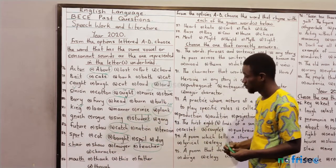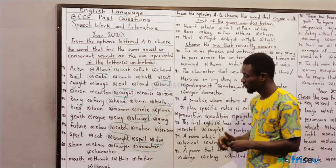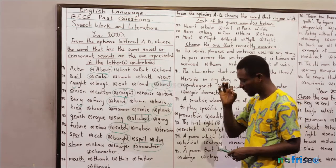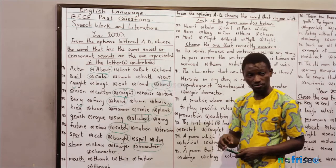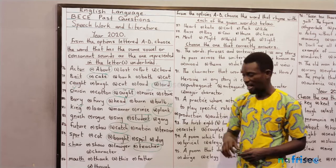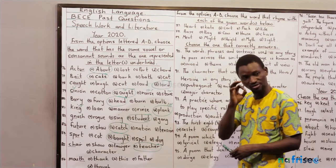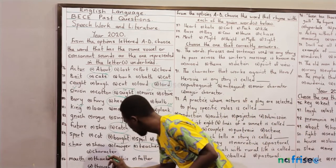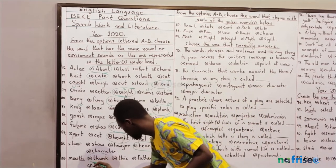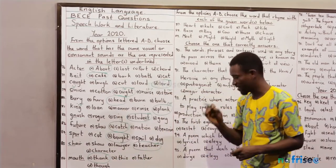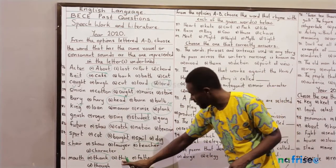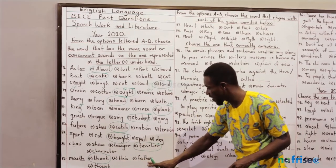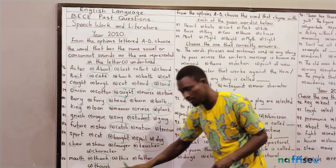The last question in this set — question 86 — 'mouth.' That's the /θ/ sound. Which option has the /θ/ sound? That's option A — 'thank.' Options B, C, and D — 'these,' 'father,' 'though' — all have the /ð/ sound.